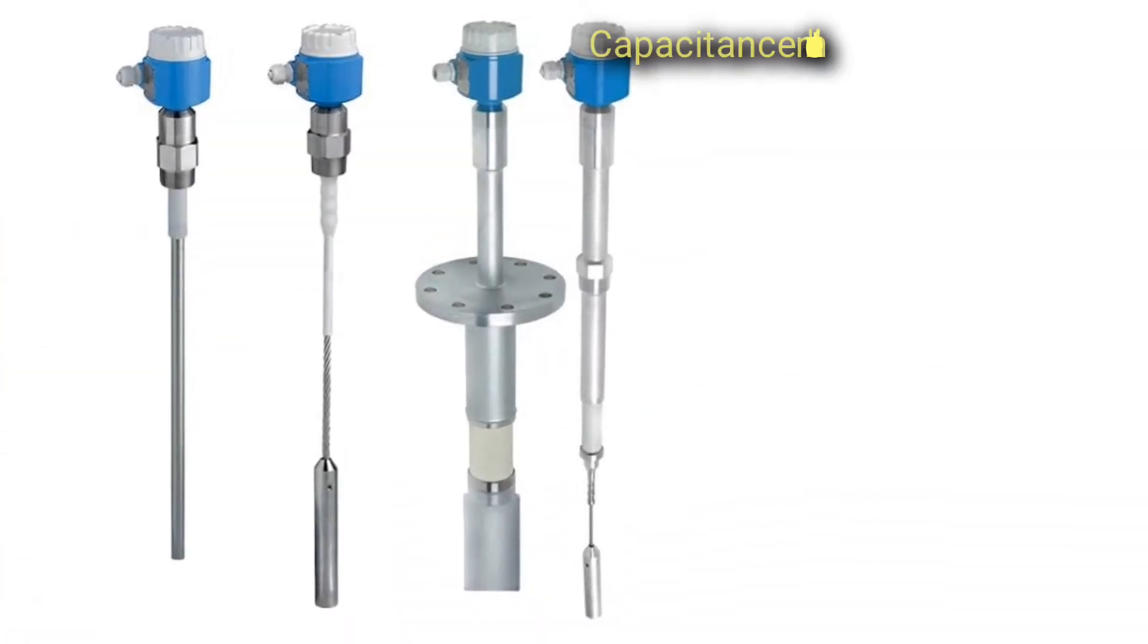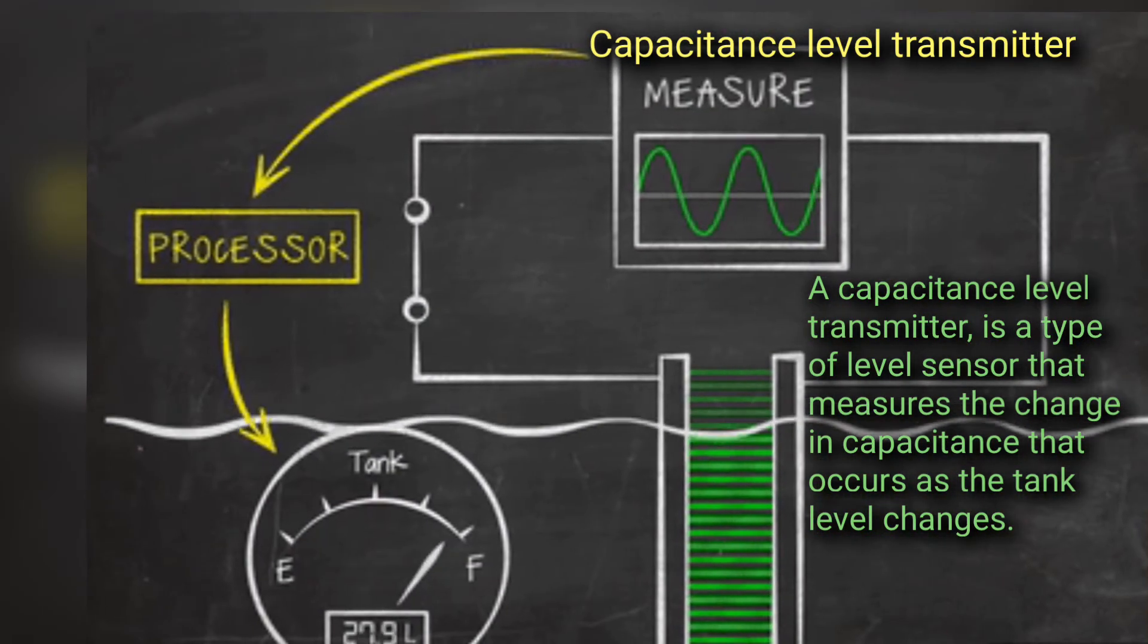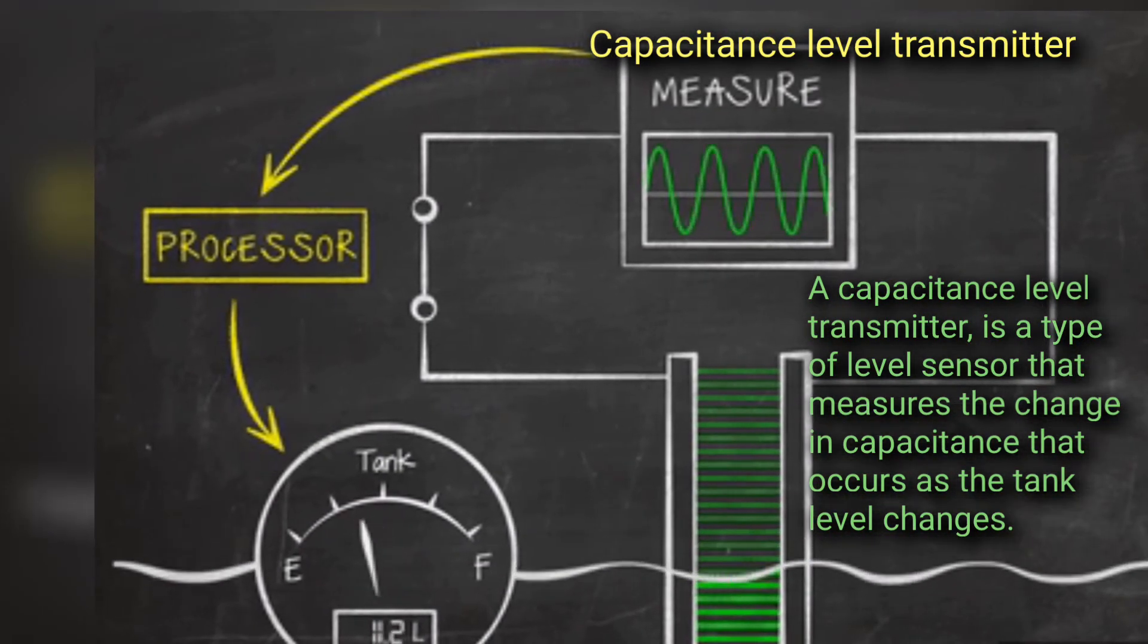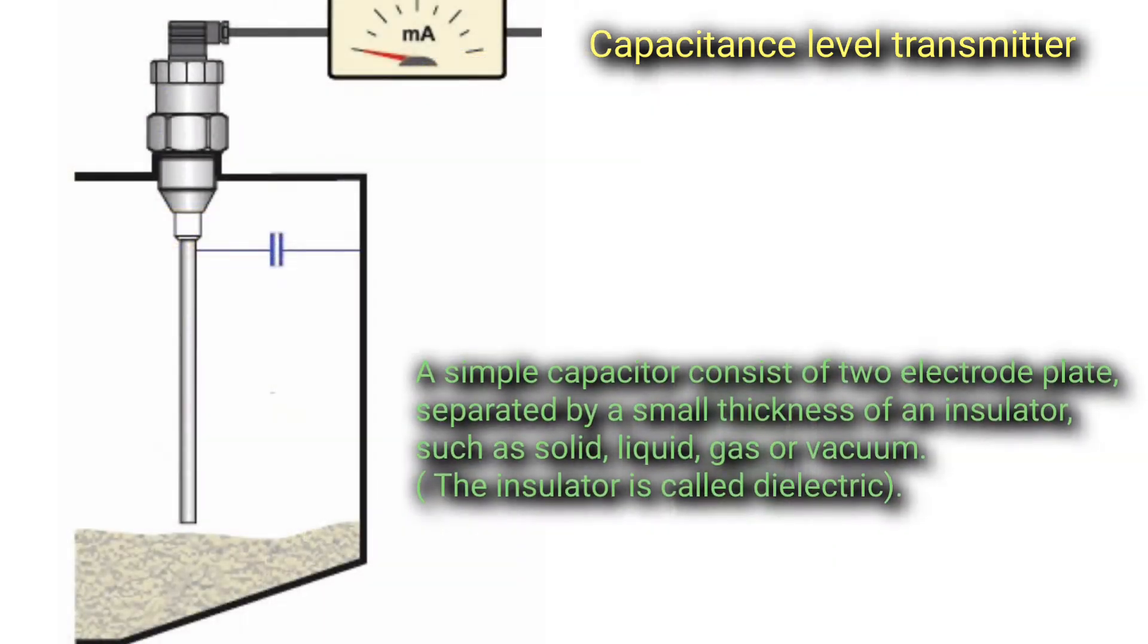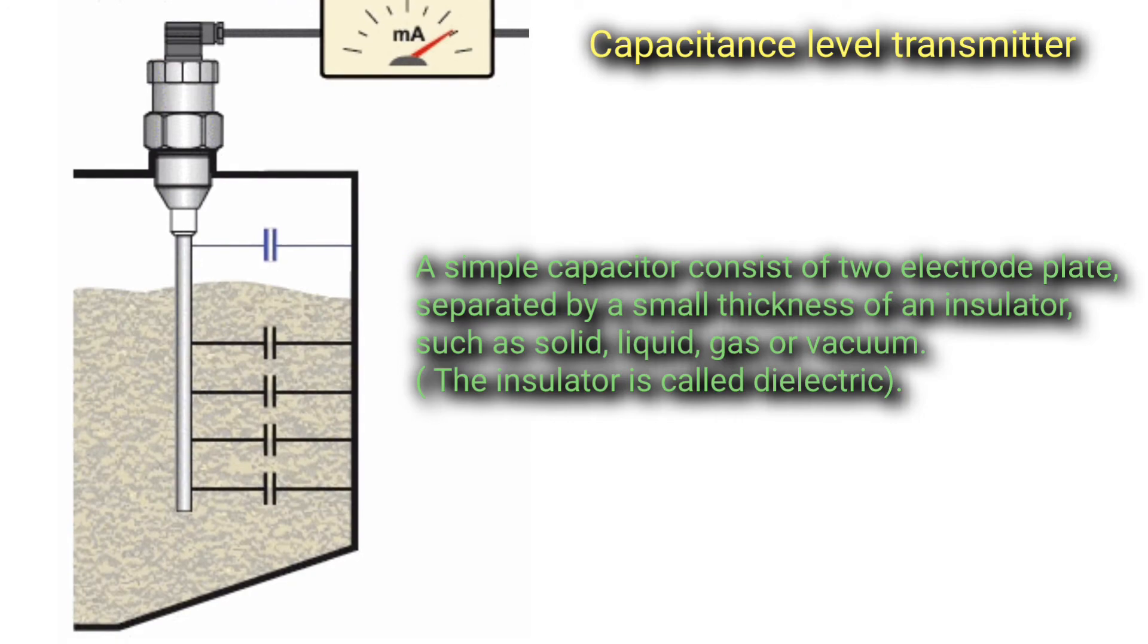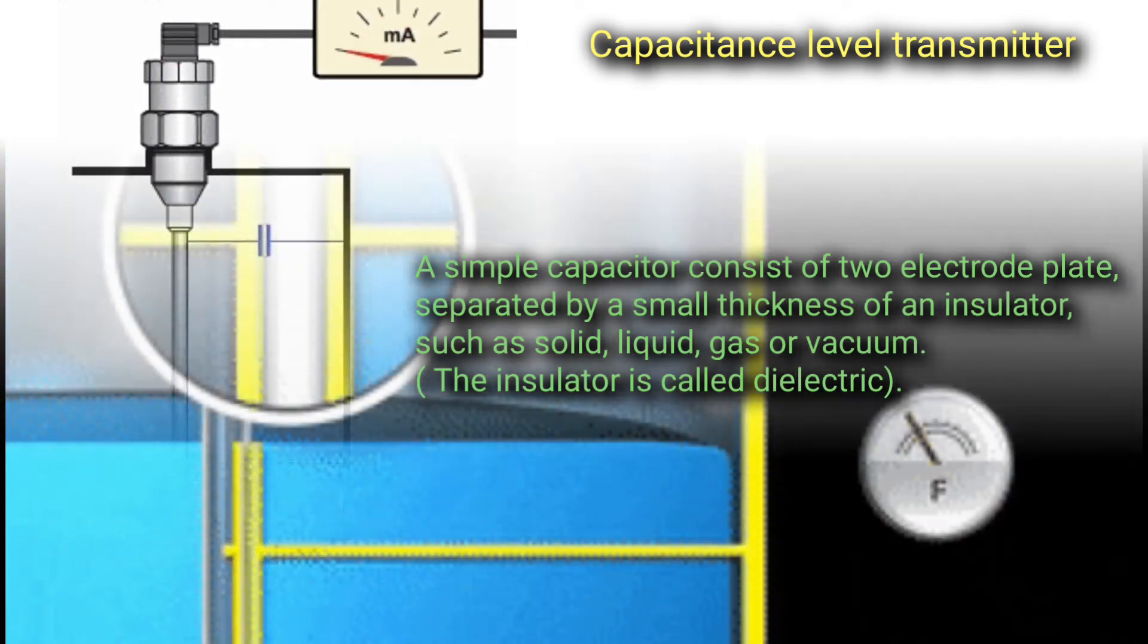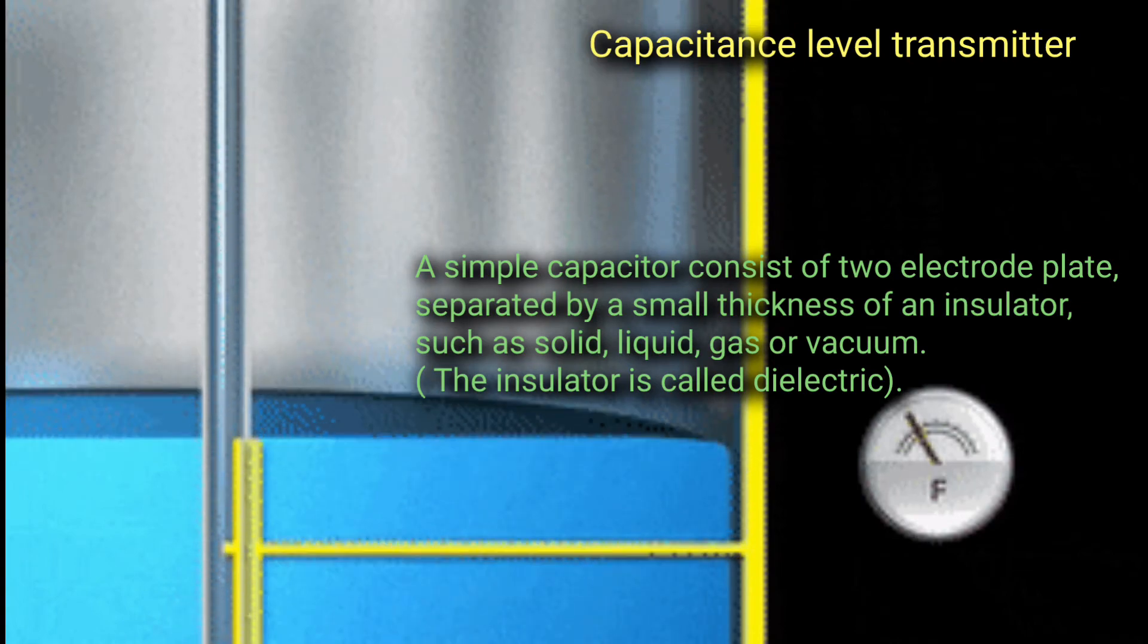Capacitance Level Transmitter. A capacitance level transmitter is a type of level sensor that measures the change in capacitance that occurs as the tank level changes. A simple capacitor consists of two electrode plates separated by a small thickness of an insulator such as solid, liquid, gas, or vacuum. The insulator is called dielectric.